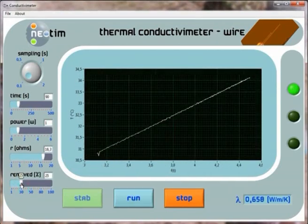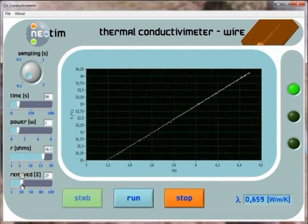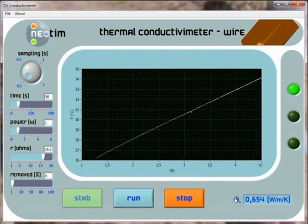When the test is complete, a light color indicates if the measure is correct. If it's green, the conductivity value displayed is right.